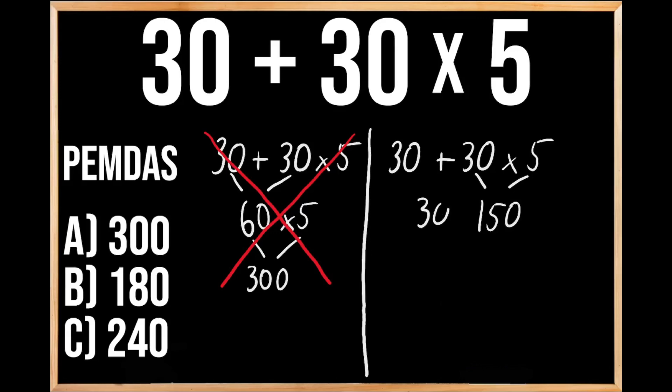So now we have 30 plus 150. And when we add 30 and 150, we get 180. So that means that our answer is B, 180.